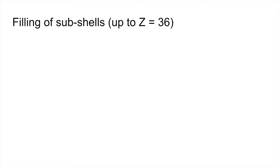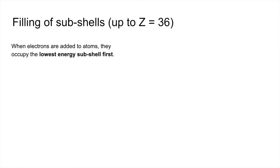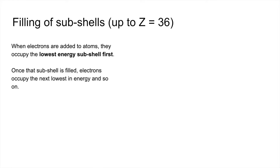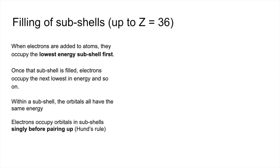We'll look at how to fill up the subshells now, going up to Z equals 36, so up to krypton. When electrons are added to atoms they occupy the lowest energy subshell first. Once that's filled they go into the next lowest energy and so on. When you're in a subshell the orbitals all have the same energy. Hund's rule states that electrons occupy orbitals singly before pairing up.